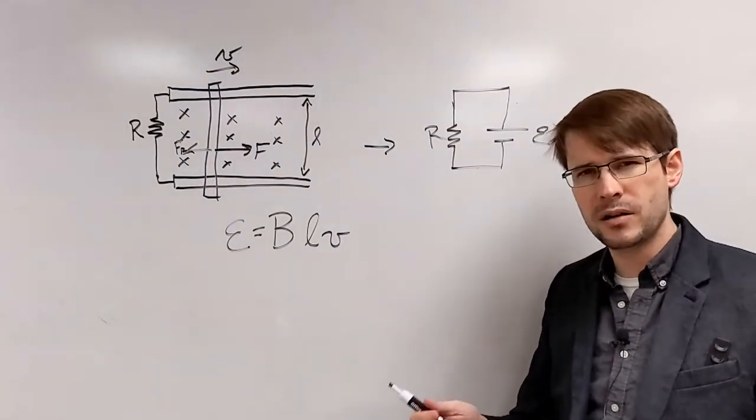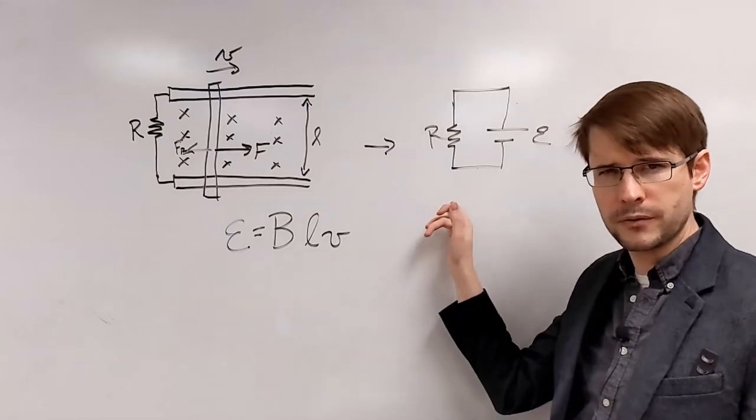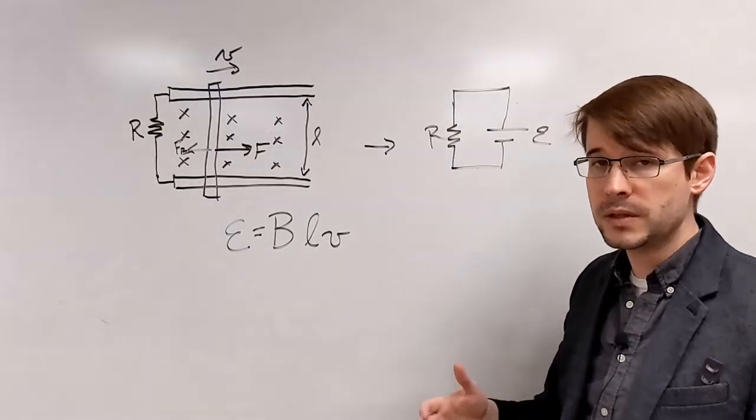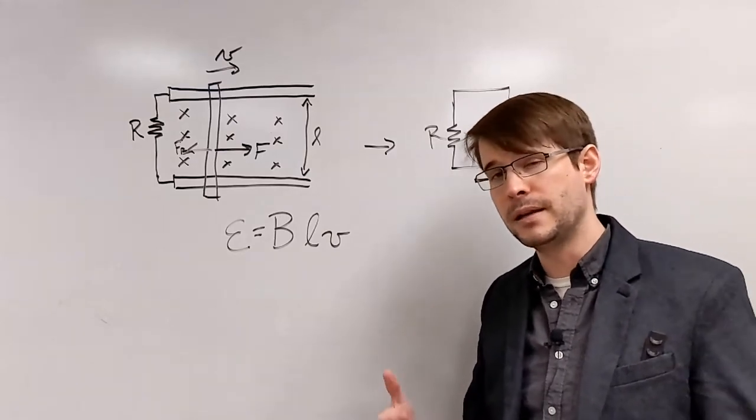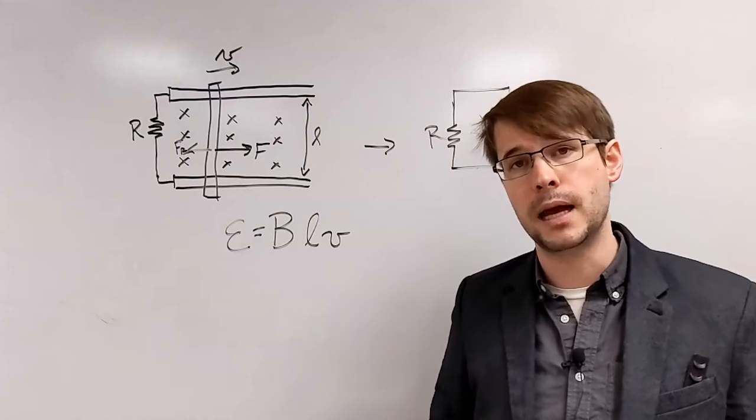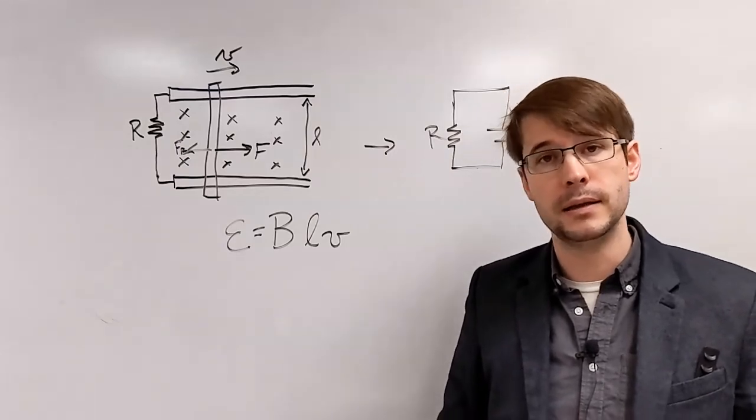So with some of this here, we can start evaluating a few more things. We can figure out the amount of current flowing in the circuit just using Ohm's law. And then using that, we can determine how strong the magnetic force is, and therefore how hard we would have to be pushing forwards to maintain this constant speed. Let's take a look.